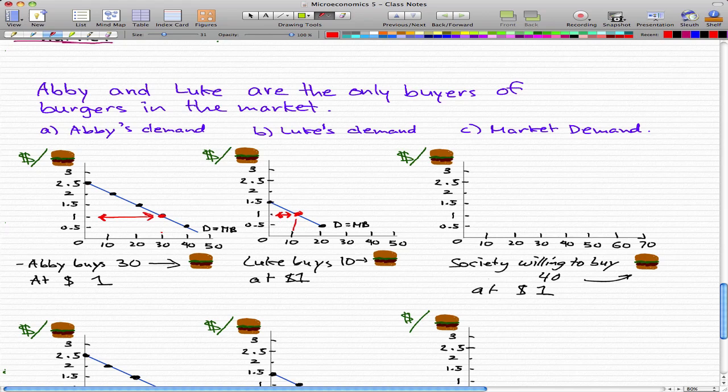So far so good. We find that at a dollar a burger, Abby is willing to buy 30 burgers. At a dollar a burger, Luke is willing to buy 10 burgers.